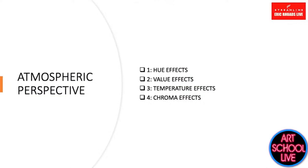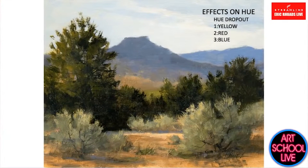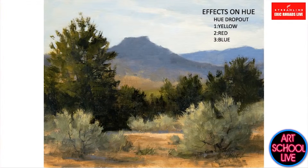All of that affects atmospheric perspective. I want to talk about how atmospheric perspective impacts each color variable. When painting a landscape, always remember what I call hue dropout. The closest things to you have yellow in them. As the distance increases, the wavelengths of yellow drop out, and you're left with only red and blue.